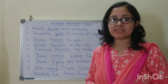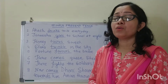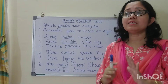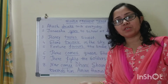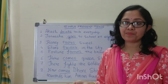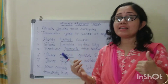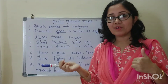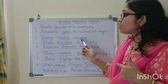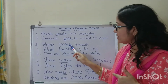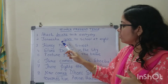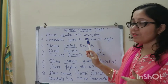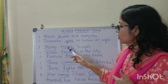Now the second point is: when we are talking about certain universal truth — that means something that is accepted by everyone. Number one: Sun rises in the east — rises. Second: Honey tastes sweet — tastes. See, honey is singular, so the verb will carry S. We have done subject-verb agreement, so tastes.